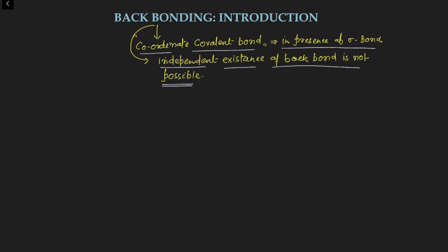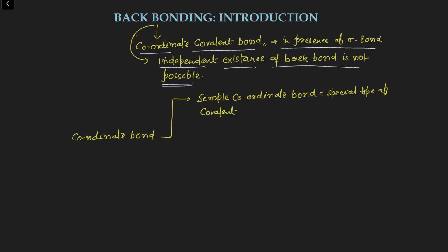We can classify coordinate bonds into two groups. The first is the simple coordinate bond. A simple coordinate bond is a special type of covalent bond in which the shared pair of electrons is provided by one of the combining atoms. The atom which donates the electron pair is known as the donor atom.